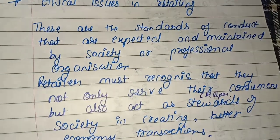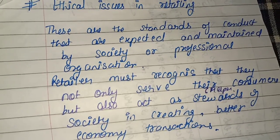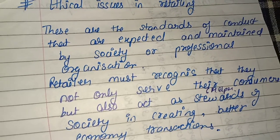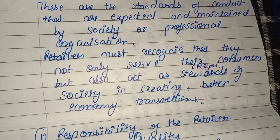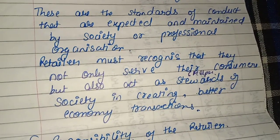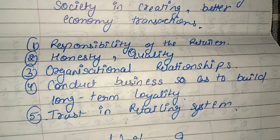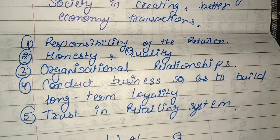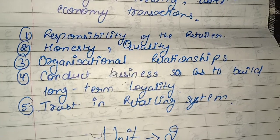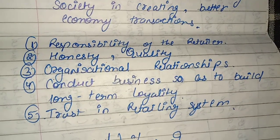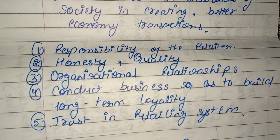The last topic is ethical issues in retailing. Ethical issues refer to the standards of conduct expected and maintained by society or professional organizations. Retailers must recognize that they not only serve their consumers but also act as a standard of society in creating better economic transactions. This includes responsibility, honesty, and quality products. Retailers should maintain organizational relationships and conduct business in a way that builds long-term loyalty and trust in the retailing system. That covers all of Unit 1 Part 2 — if you have any doubts, let me know in the comments and check my playlist for more.